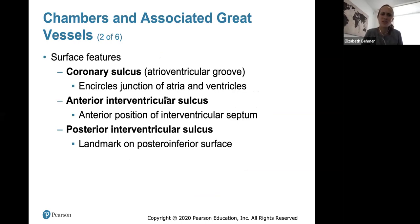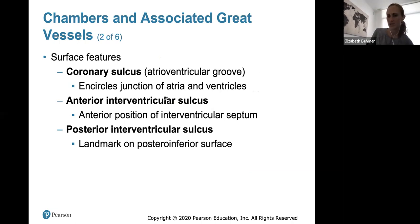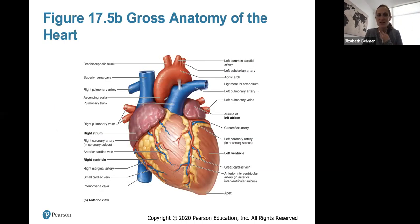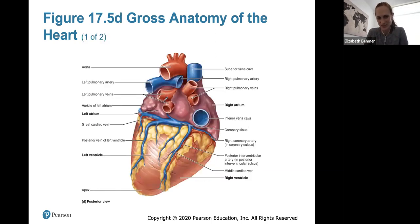Some surface features: the coronary sulcus lies in the atrioventricular groove between the atria and ventricles, encircling their junction. We also have anterior and posterior interventricular sulci, which are landmarks on the anterior and posterior surfaces between the ventricular walls. Here's more gross anatomy of the heart from a surface view — reviewing this is very important.